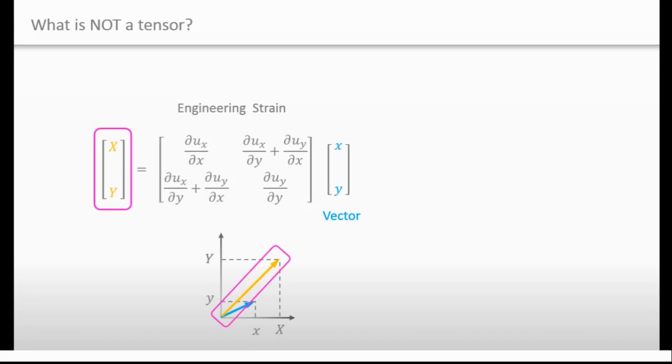Do you think this arrow is a vector? Actually, this is not a vector. I will give you the reason.